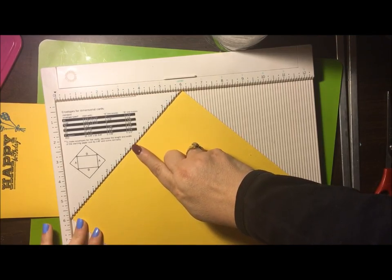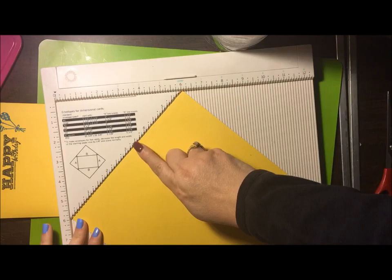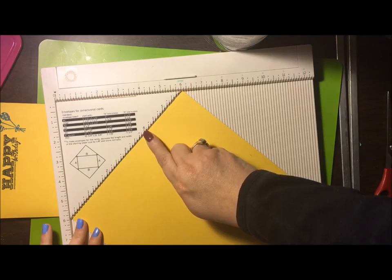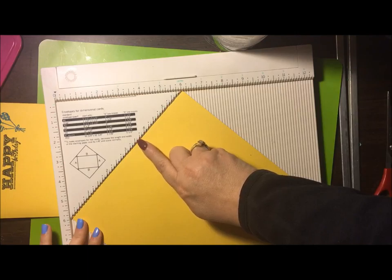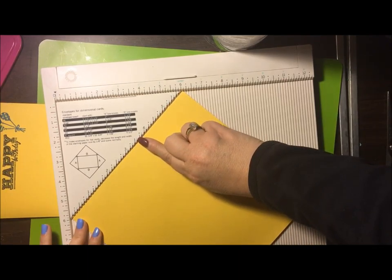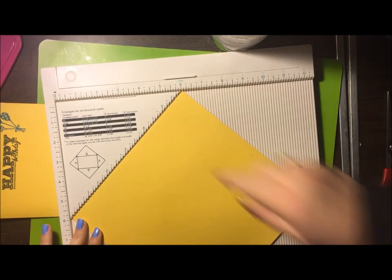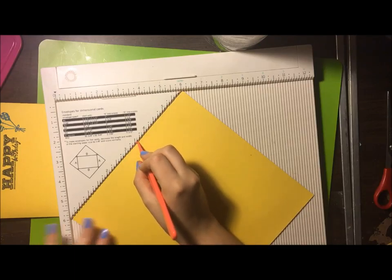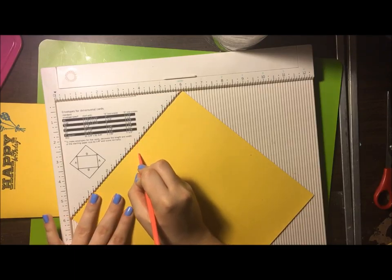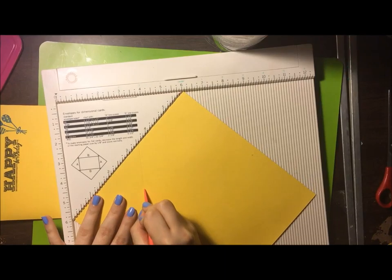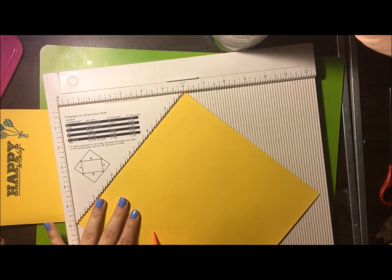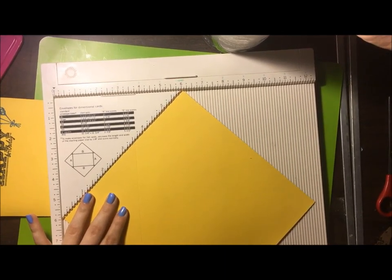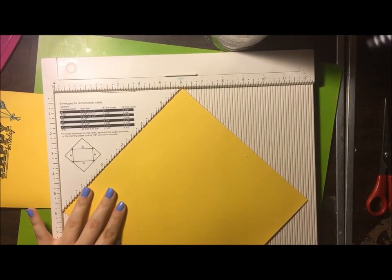Now you're going to do it at 3 and 5 eighths. Do you know how to do 5 eighths? You're going to count. This is one, two, three, four, five, six, seven, eight. So that's eight. So your 5 eighths is one, two, three, four, five. It's the one past half. Three and a half. So score that all the way down.